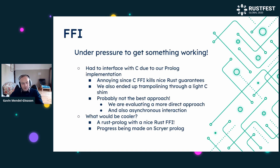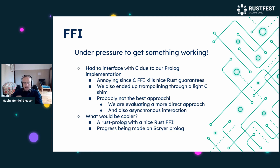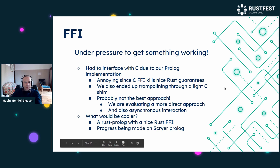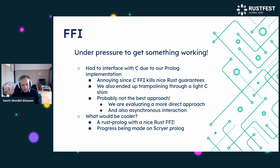In terms of challenges, I'm sure everyone in the Rust community knows about FFI challenges. We had an interface with C because our Prolog implementation was written in C, so it had a comfortable interaction with the C stack. When interfacing with Rust, we're doing it through a C FFI, which kills some of the nice guarantees you get from Rust, but at least they're isolated to the interaction surface. We ended up trampolining through a light C shim — this is probably not the best approach. We're evaluating a much more direct approach currently, and I won't try to tell everybody we've done it right.